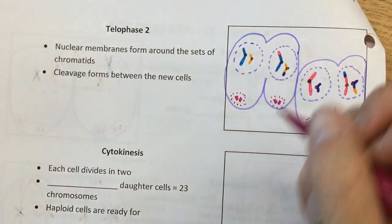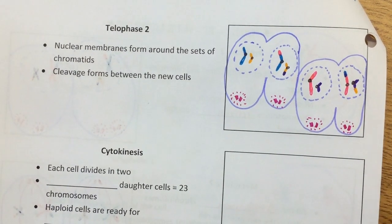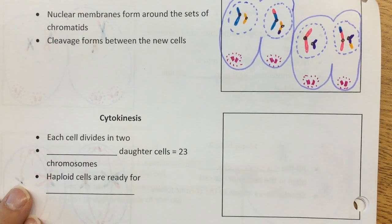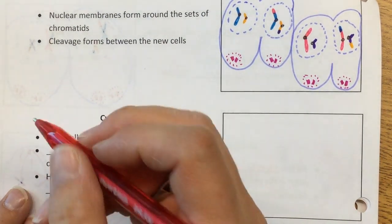So they're about to separate, okay, but not quite yet, okay? And the last stage is cytokinesis. Here, each cell divides in two. So now we're going to have four haploid daughter cells.